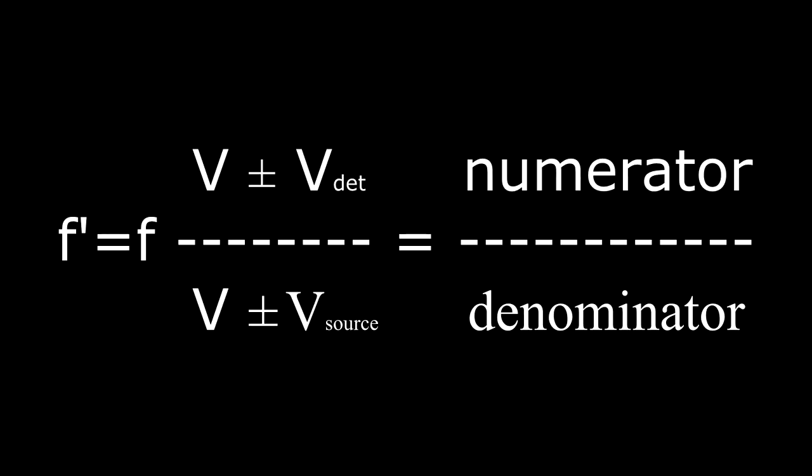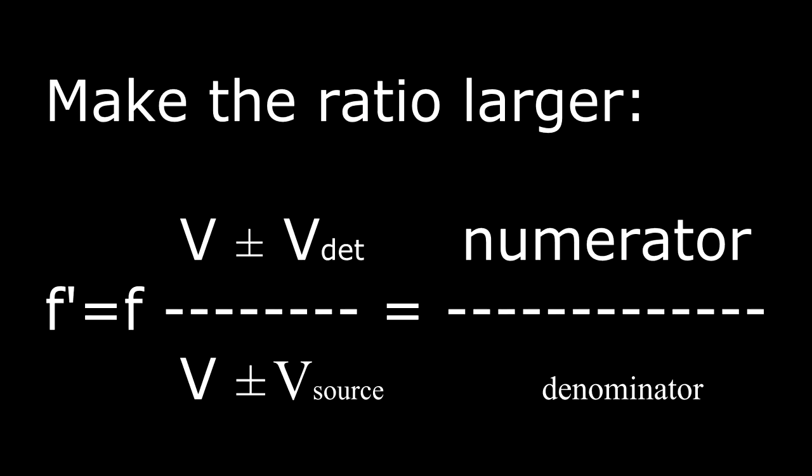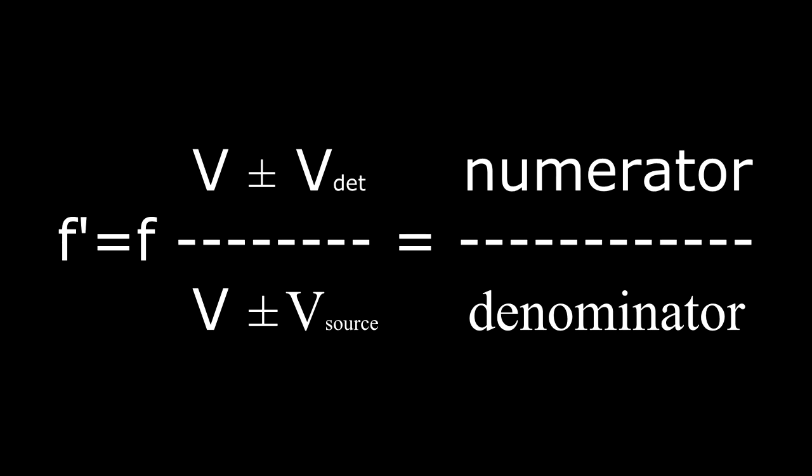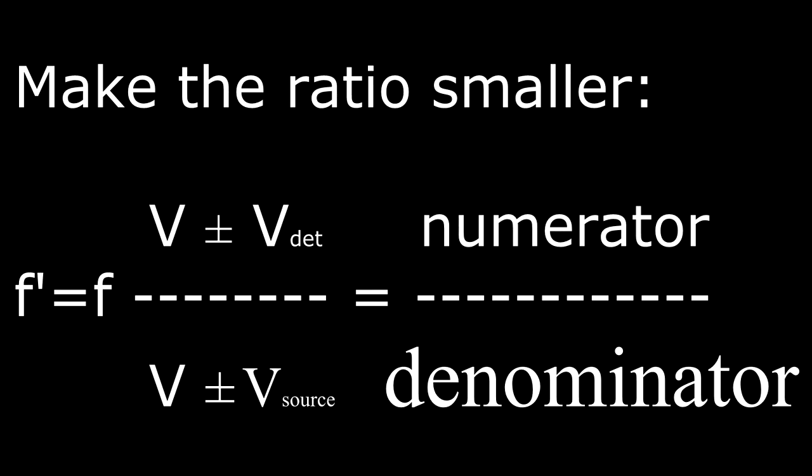This equation is the ratio of a numerator and a denominator. There are two ways to make the ratio larger: you can either increase the numerator or decrease the denominator. There are two ways to make the ratio smaller: you can either decrease the numerator or increase the denominator.